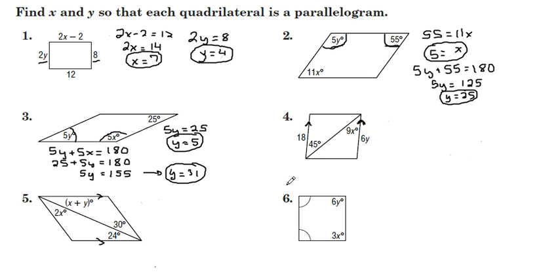Alright, number 4. We have a diagonal here, and we want to prove it is a parallelogram. Opposite sides are parallel. And what we have here is alternate interior angles. The 45 degrees and the 9x degrees. Alternate interior angles are congruent if parallel lines are cut by a diagonal. So we can set 9x equal to 45. We'll divide both sides by 9. And then x equals 5.